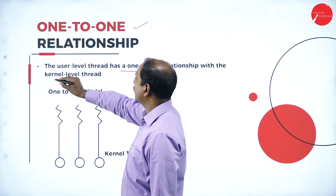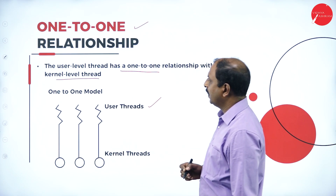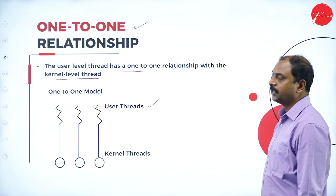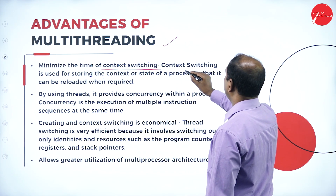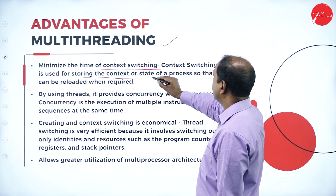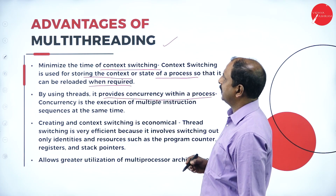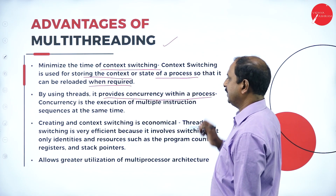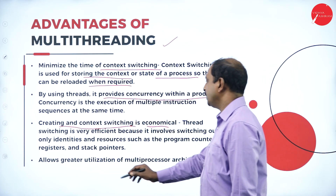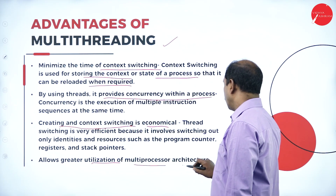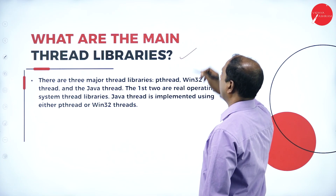Another model is the one-to-one relationship, where each user-level thread has a one-to-one mapping with a kernel-level thread. In the example, there are three user-level threads and three kernel-level threads. Advantages of multi-threading include: it minimizes context switching time, provides concurrency within a process, context switching is economical, and it allows better utilization of multi-processing architectures.